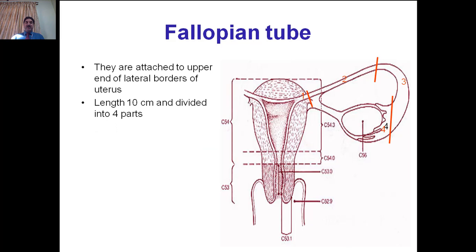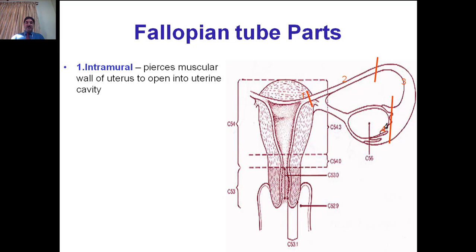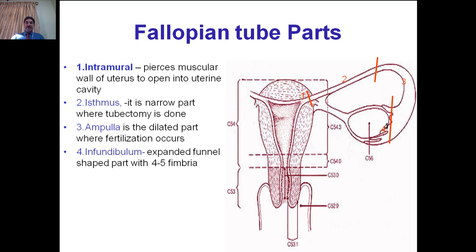The fallopian tubes, also called uterine tubes, are attached to the upper end of the lateral borders of the uterus. Their length is 10 cm and they are divided into four parts: intramural part, isthmus, ampulla, and infundibulum. The intramural part traverses the muscular wall of the uterus to open into the uterine cavity. The isthmus is the narrow part where tubectomy is done. The ampulla is the dilated part where fertilization occurs. The infundibulum is the expanded funnel-shaped part with four to five fimbriae and a lateral opening into the pelvic cavity. One fimbria is attached to the ovary, called the ovarian fimbria.